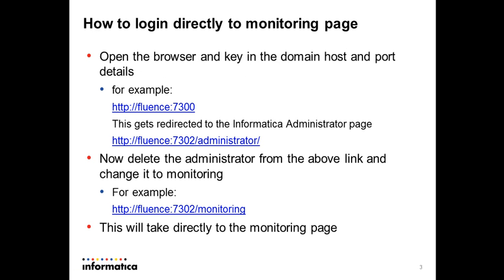To do that, first we have to find out the port details. The first step is to log into the domain host URL. For example, in this case I am trying to access http://fluence:7300. When I enter this in the browser, this gets redirected to the Informatica Administrator page — specifically to http://fluence:7302/administrator.